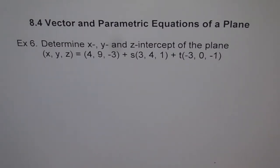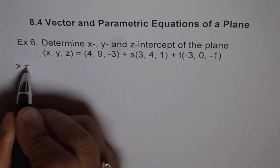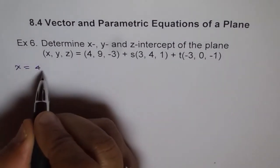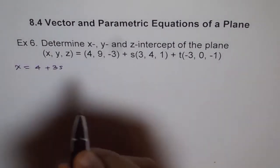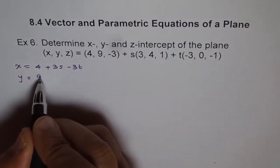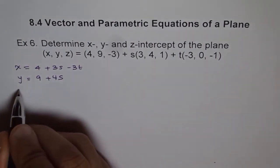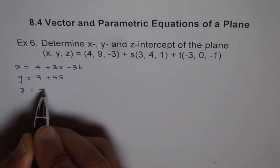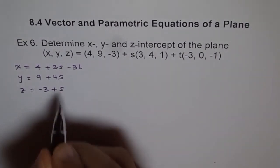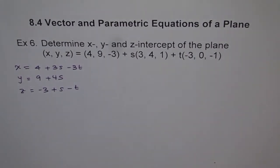To find the x, y, z intercepts, it will be better if we write the equation in parametric form — that will make it easier. So we have x equals 4 plus 3S minus 3T, y equals 9 plus 4S, and z equals minus 3 plus S minus T. These are our parametric equations from the vector equation.